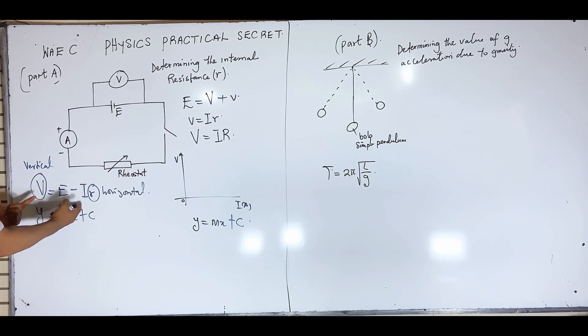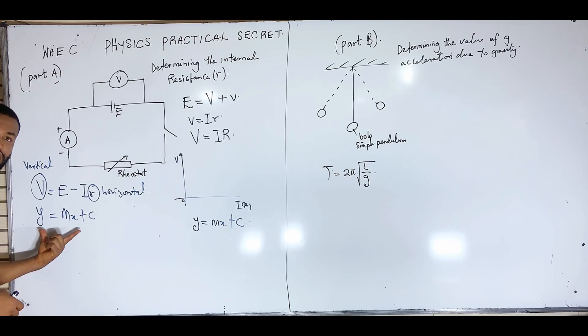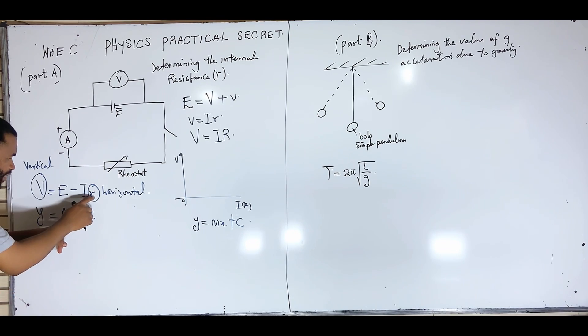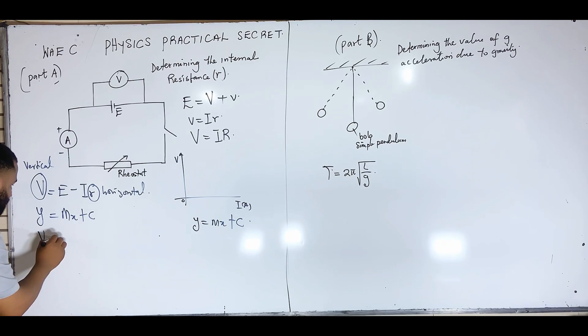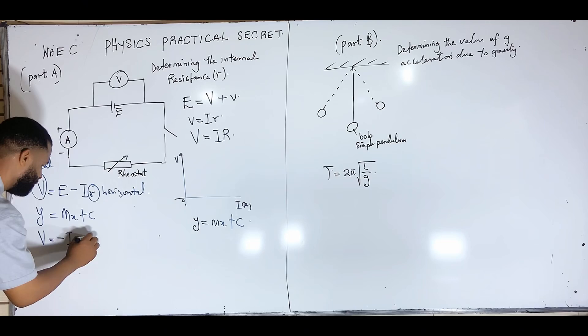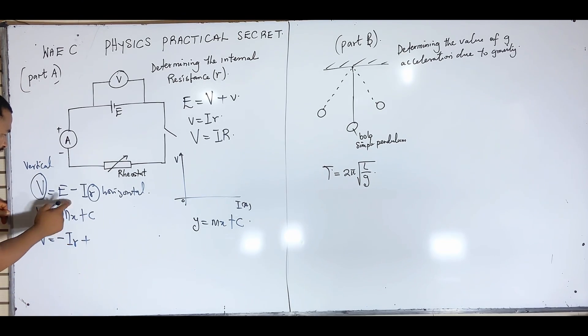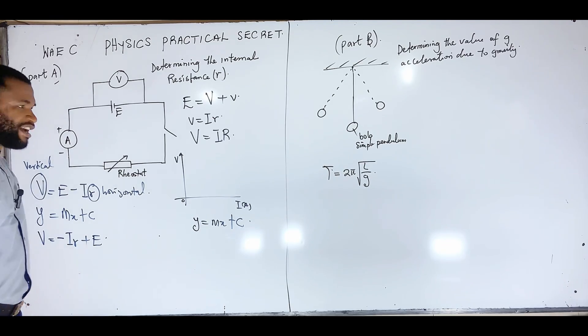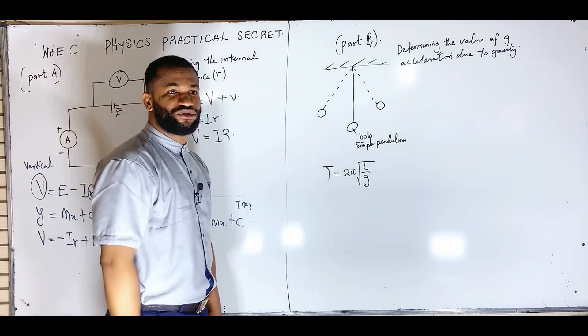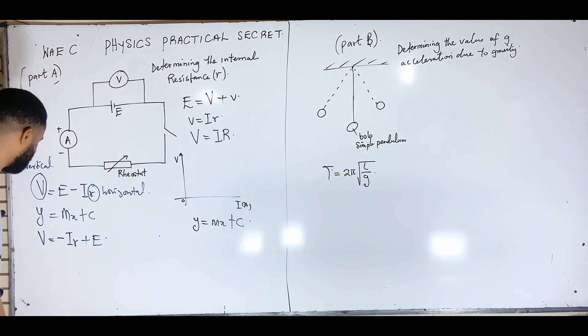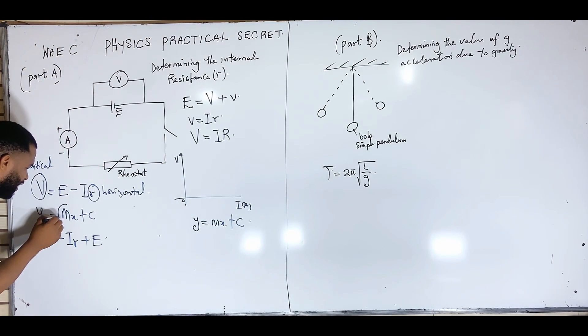Now you realize that V is the vertical and this small R is the horizontal. Now when you answer these two questions, you compare it with the straight line equation, the equation of a straight line, and that is going to be Y is equal to MX plus C. If you check V very well, you realize that you need to reposition this equation to look exactly like this.